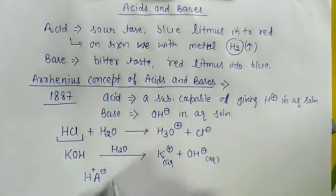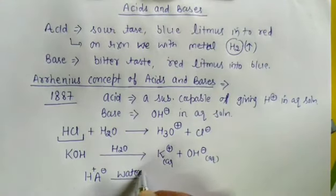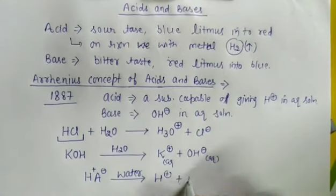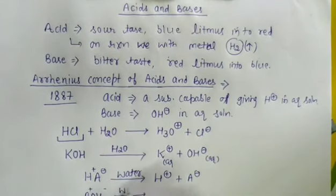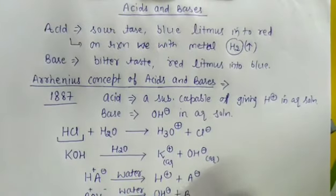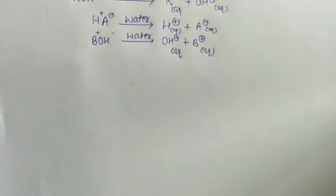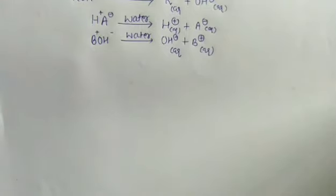So the Arrhenius concept states that any substance which can produce H⁺ ions when dissolved in water behaves as an Arrhenius acid, and any substance which gives hydroxyl ions when dissolved in water is called an Arrhenius base. Regarding the strength of an acid or base, Arrhenius said that strength mainly depends upon the capacity of ionization to H⁺ or OH⁻ ions respectively.